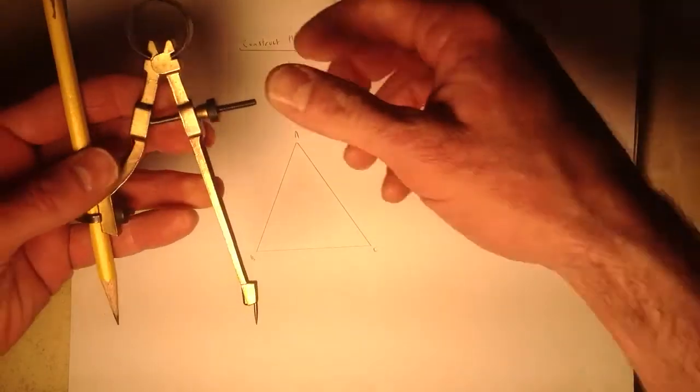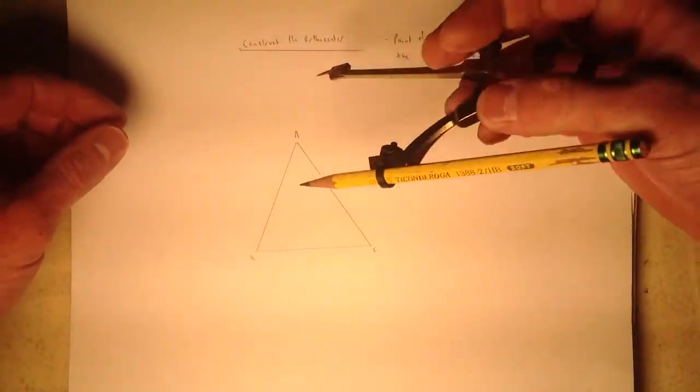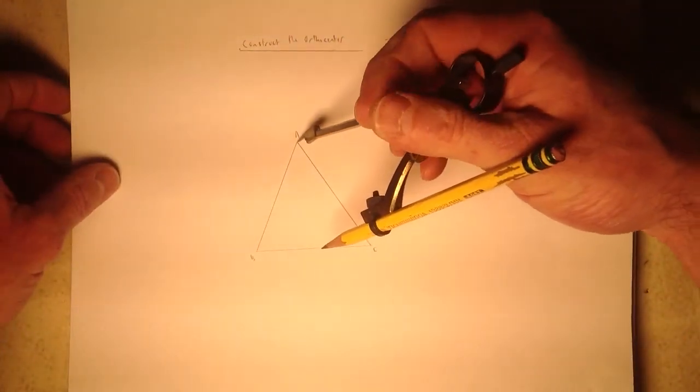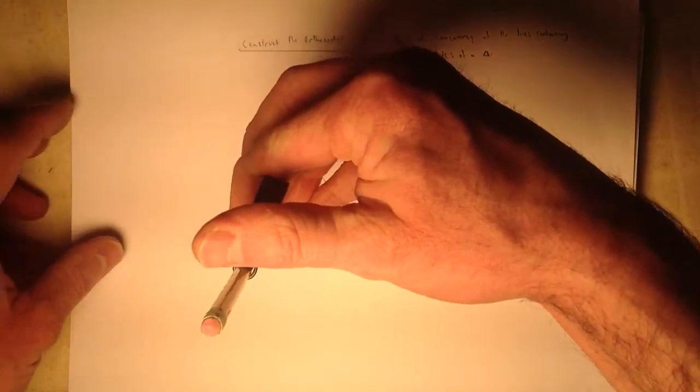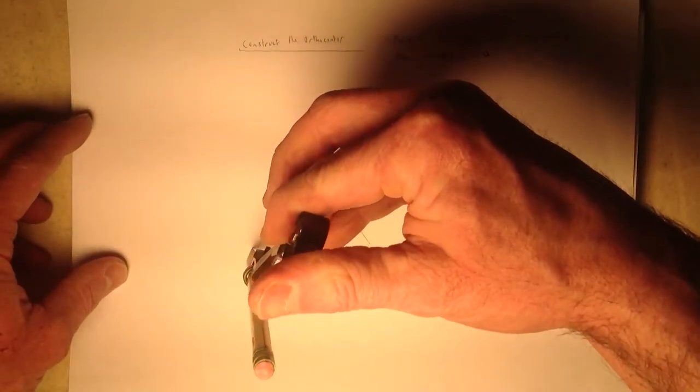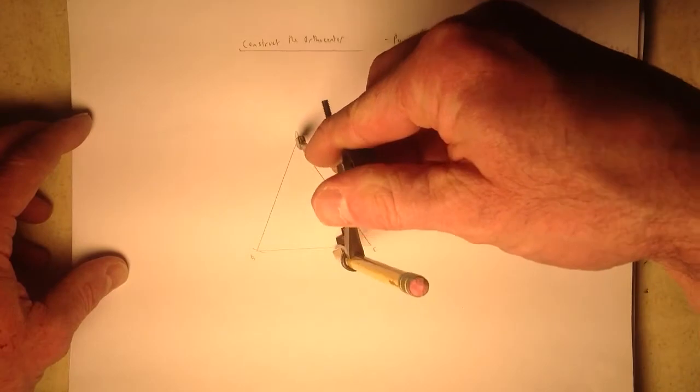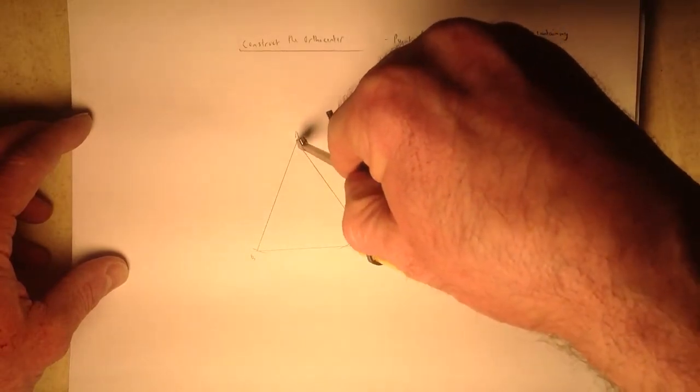To do that, I will place the compass at A, and we'll set it so that it will intersect BC in two points. This is a fairly decent setting here. There's one, two points.